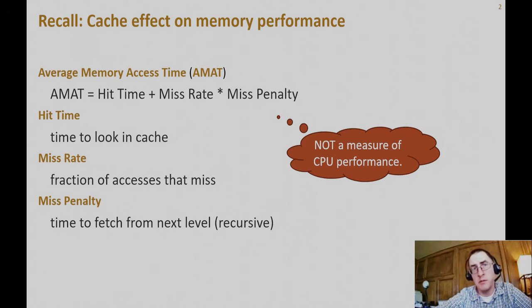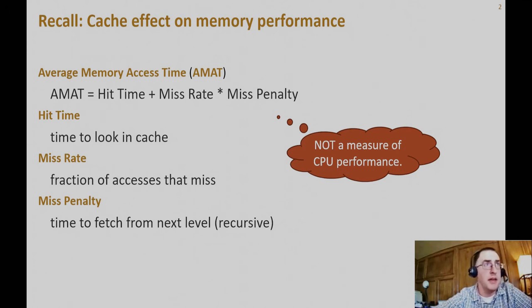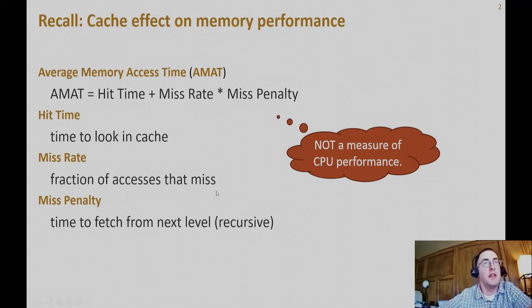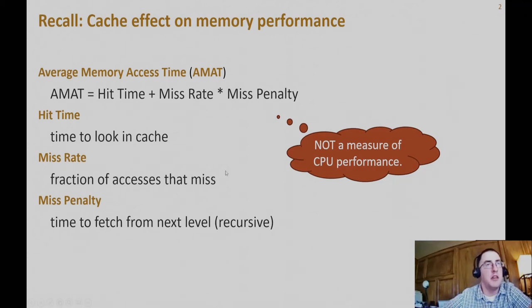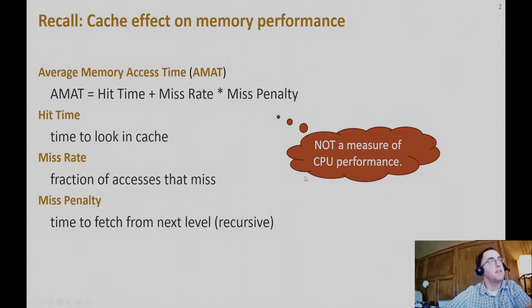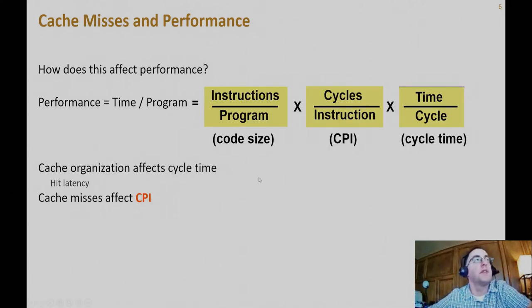Some cache organizations allow you to check the hit in parallel with getting the data back. AMAT is not a measure of computer system performance — it's solely looking at the memory.